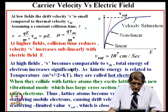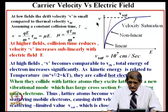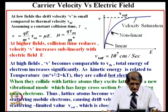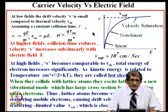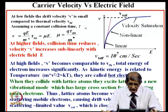Before we go into velocity saturation, we take a quick look at the velocity versus electric field characteristics of carriers. This holds for both electrons and holes; I am showing it mainly for electrons. In thermal equilibrium, when no electric field is applied, free electrons move in random directions due to thermal energy, moving with a thermal velocity of about 10^7 centimeters per second.